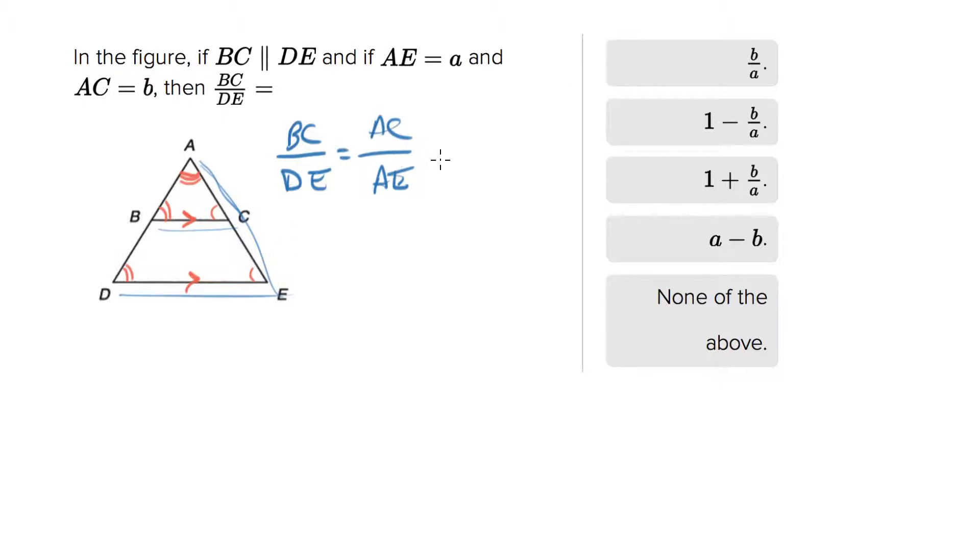Now they tell us values. They asked us for BC equals DE, so that's what we're trying to find, and they give us values to plug in for AC and AE. So AC is B and AE is A. So this is your answer, B over A, and that's the first answer choice.